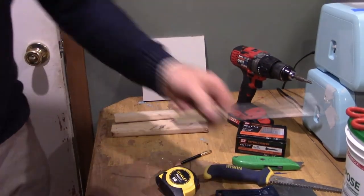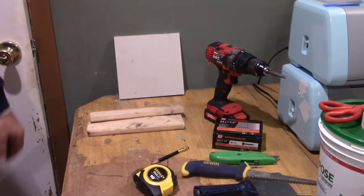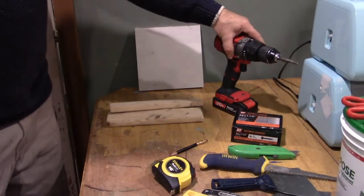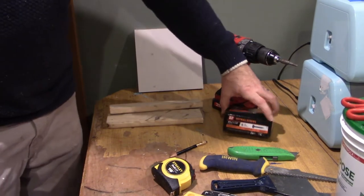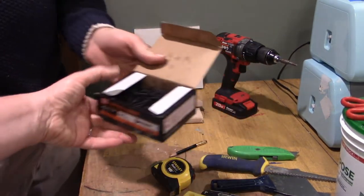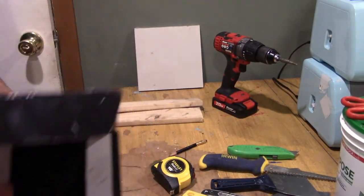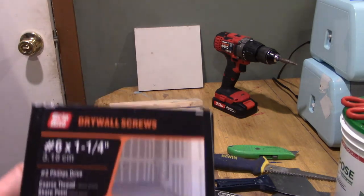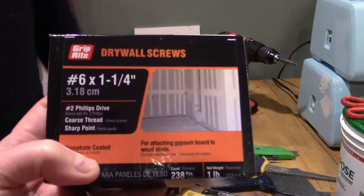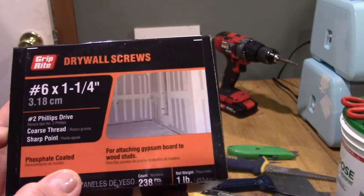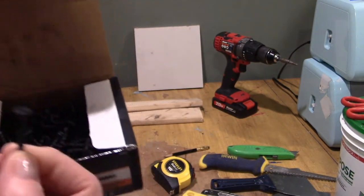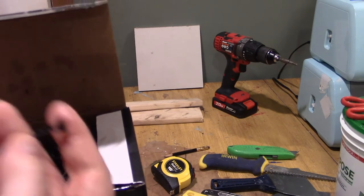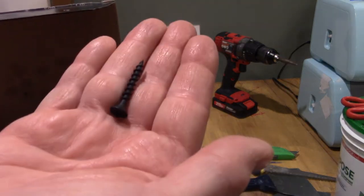So the screwdriver was only to remove the switch plate. Got a drill and some sheetrock screws. These are inch and a quarter long. That's really all you need. Number six inch and a quarter. They've got the Phillips head top.